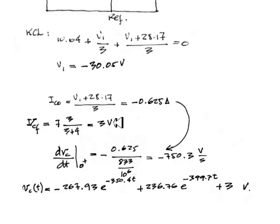With that final value, with the initial voltage in the capacitor that we obtained before, and with this initial rate of change of the voltage in the capacitor, we can solve for the constants of integration K1 and K2. And this is the voltage in the capacitor as a function of time. Thank you very much.